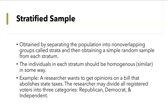So for example, a researcher wants to get opinions on a bill that abolishes state taxes. The researcher may divide all registered voters into three categories — Republican, Democrat, and Independent — which are your typical political categories. Those are non-overlapping groups because you usually don't have anybody say they're both Republican and Democrat, or both Democrat and Independent. People typically choose one. So if the groups are divided into three categories, they will randomly pick people from each category. That's a stratified sample.